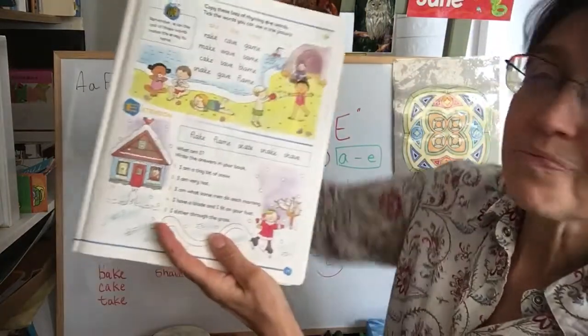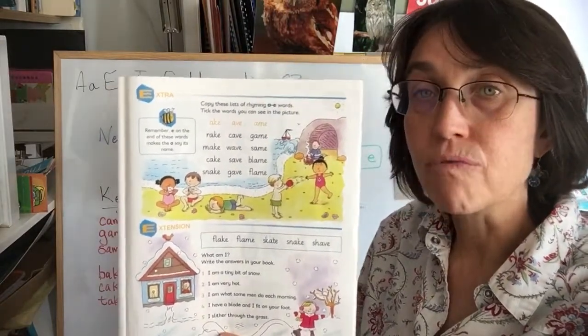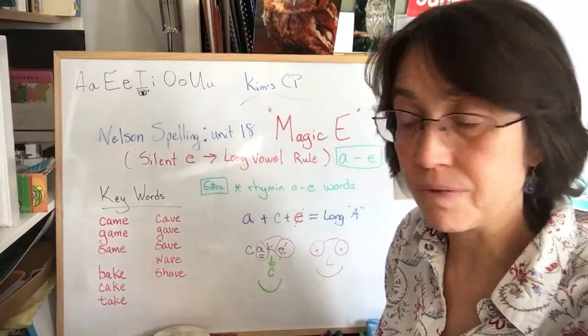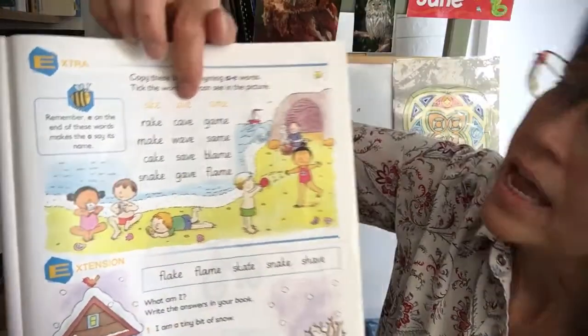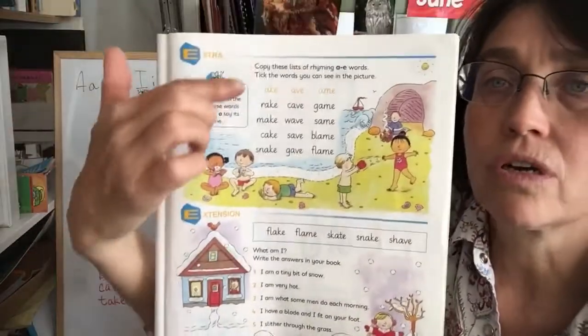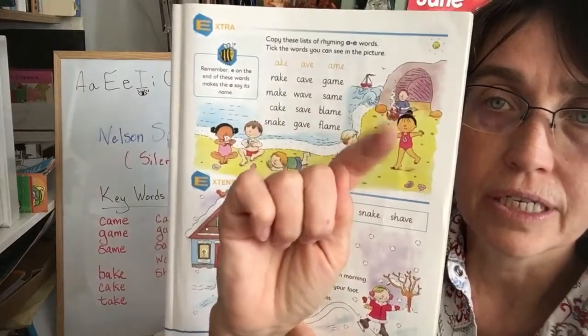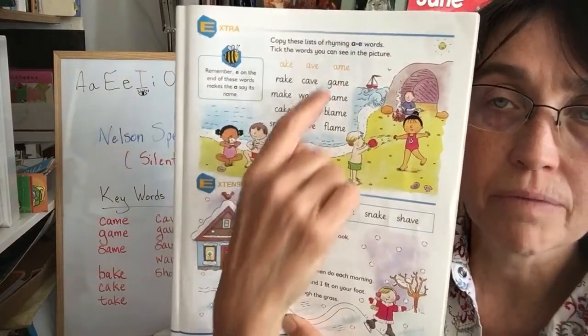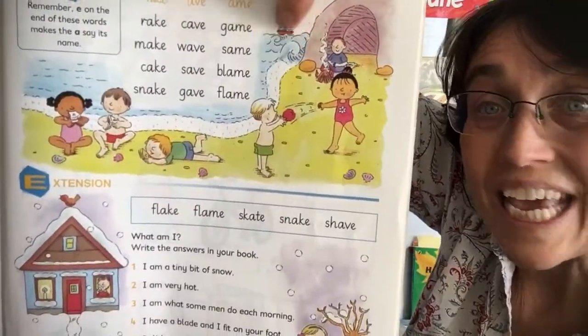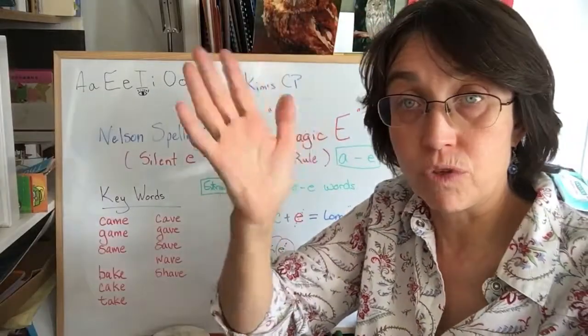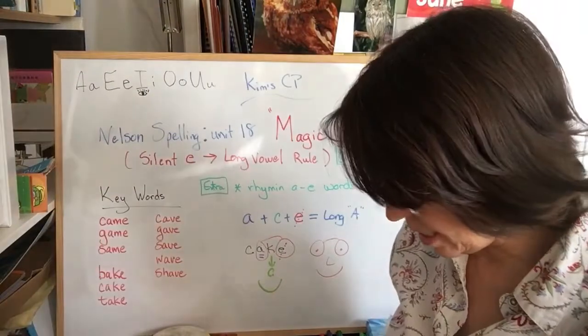Next, you go to page 39. And you have extra. And it wants you to do the same as we did in unit 17. You have rhyming families, the A-E rhyming words. So all you need to do is copy these rhyming families, look very well at the picture, and then tick the words in the rhyming families that you see in the picture. For example, those are waves. Wave. So you have the verb to wave, and you have the ocean movement of water, which is a wave.